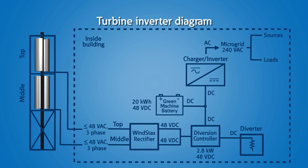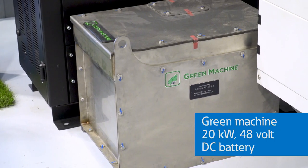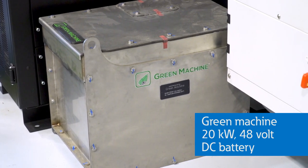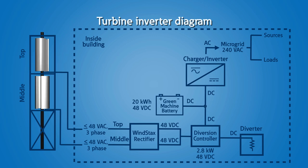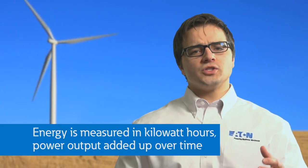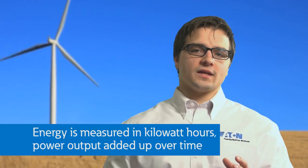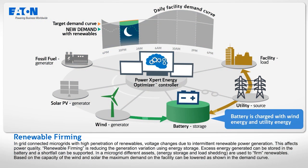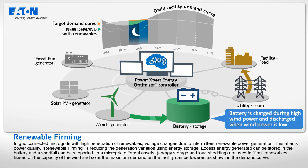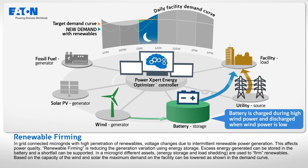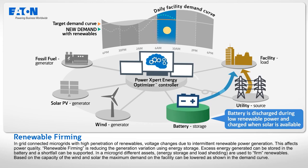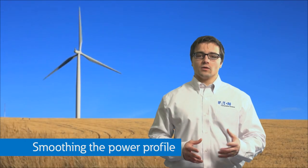The Windstax generator creates 48-volt, three-phase AC power that is rectified with the charge controller unit and fed into an inverter charger. This DC power is used to charge a Green Machine 20-kilowatt-hour, 48-volt DC battery that stores the energy from the wind turbine. The DC power is then inverted to AC power and fed into our microgrid. Because the power output of the turbine will vary, we can charge the battery and capture the maximum energy over a period. In times of overproduction, the battery will be charged for use later when the wind slows down, helping smooth the power profile and putting less stress on the microgrid.